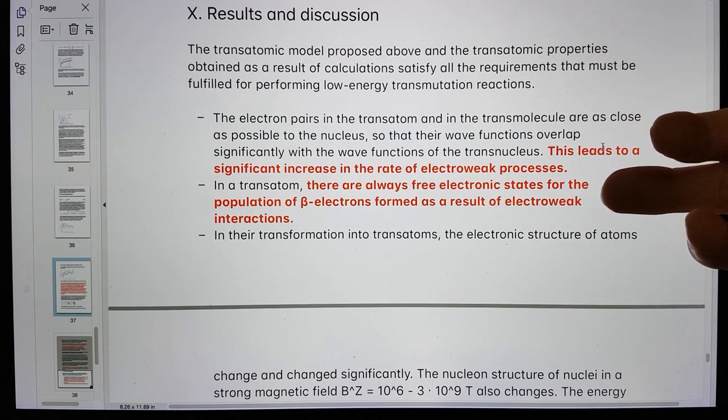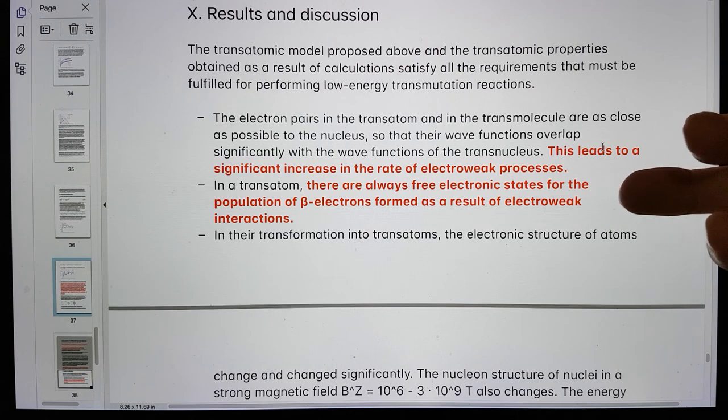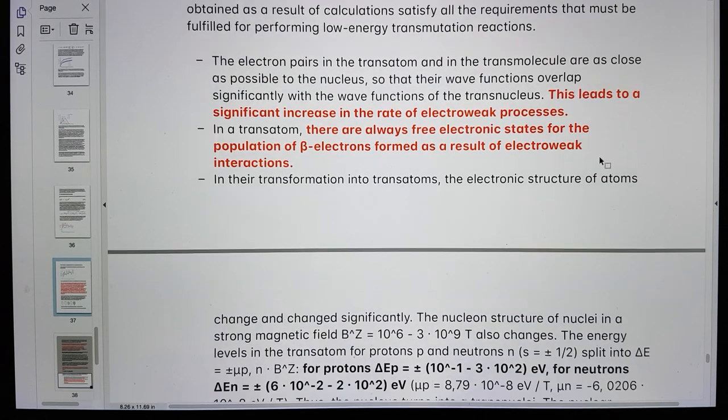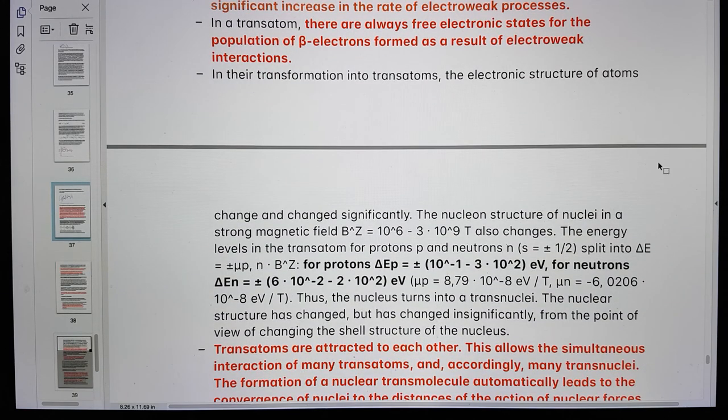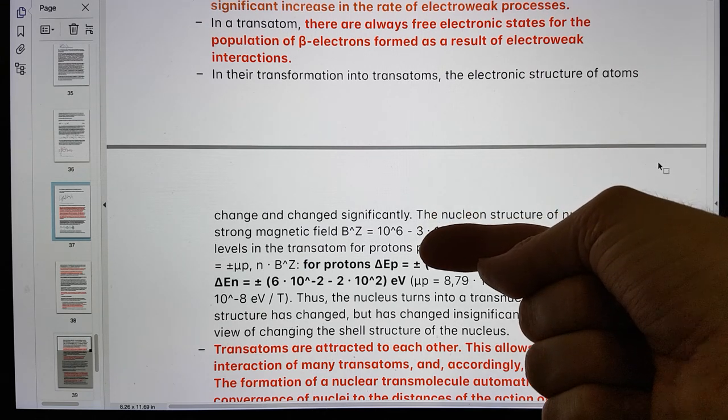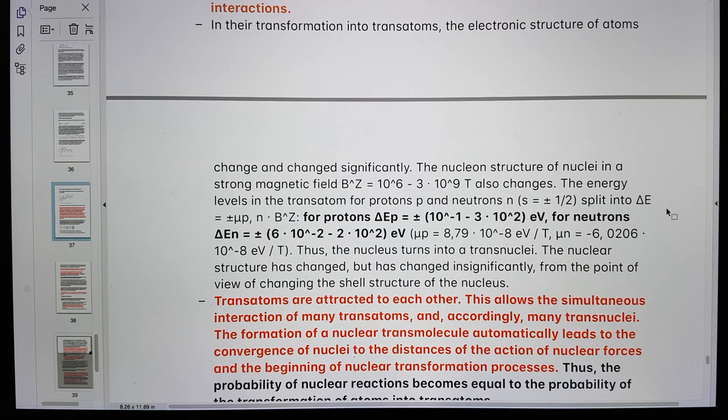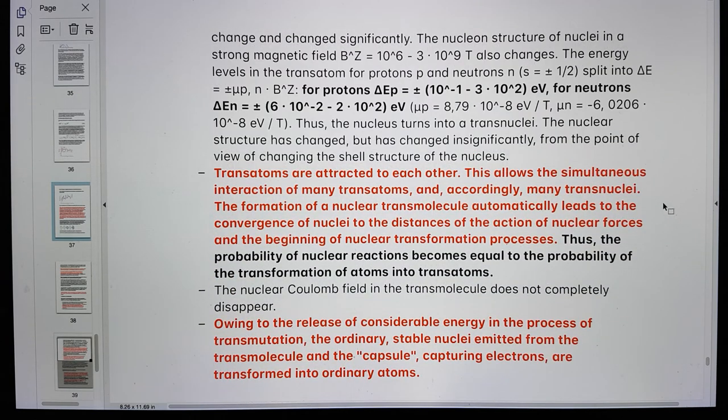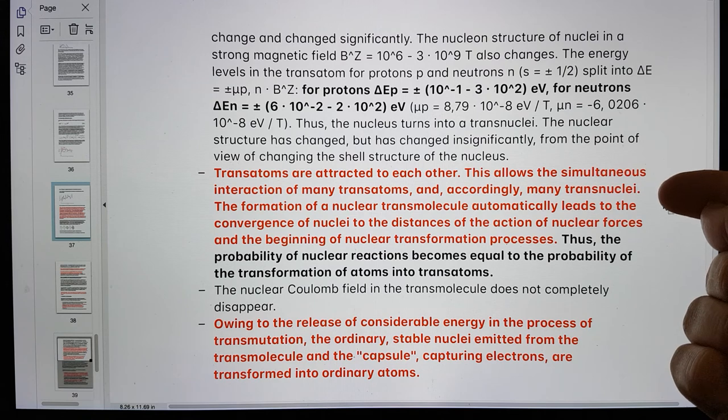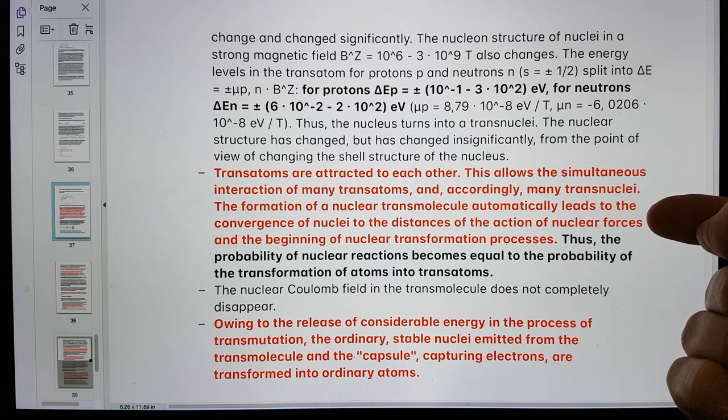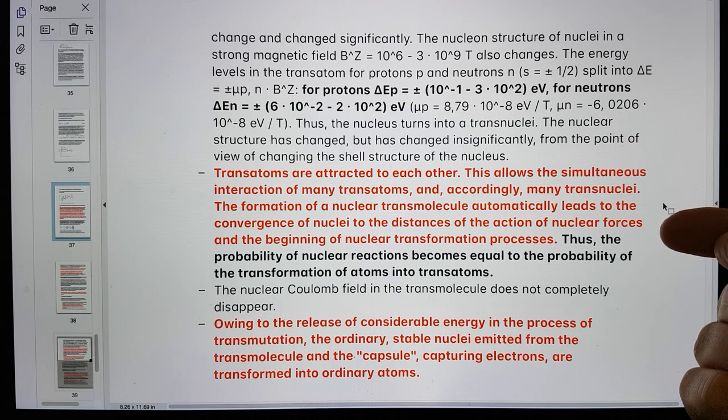In transatoms, there are always free electron states for the population of beta electrons formed as a result of electroweak interactions. In the transformation to transatoms, the electronic structure of atoms changed significantly. Transatoms are attracted to each other. This allows the simultaneous interaction of many transatoms and transnuclei. The formation of a nuclear transmolecule automatically leads to the convergence of nuclei to the distances of the action of nuclear forces and the beginning of nuclear transformation processes.